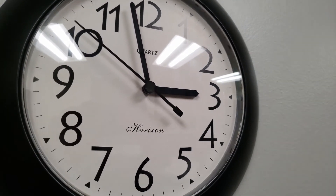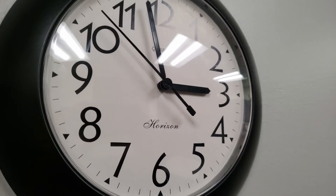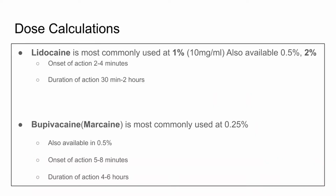Bupivacaine is also commonly used because it has an onset of 5–8 minutes but a duration of 4–6 hours. It is most commonly used in 0.5% or sometimes 0.25%.